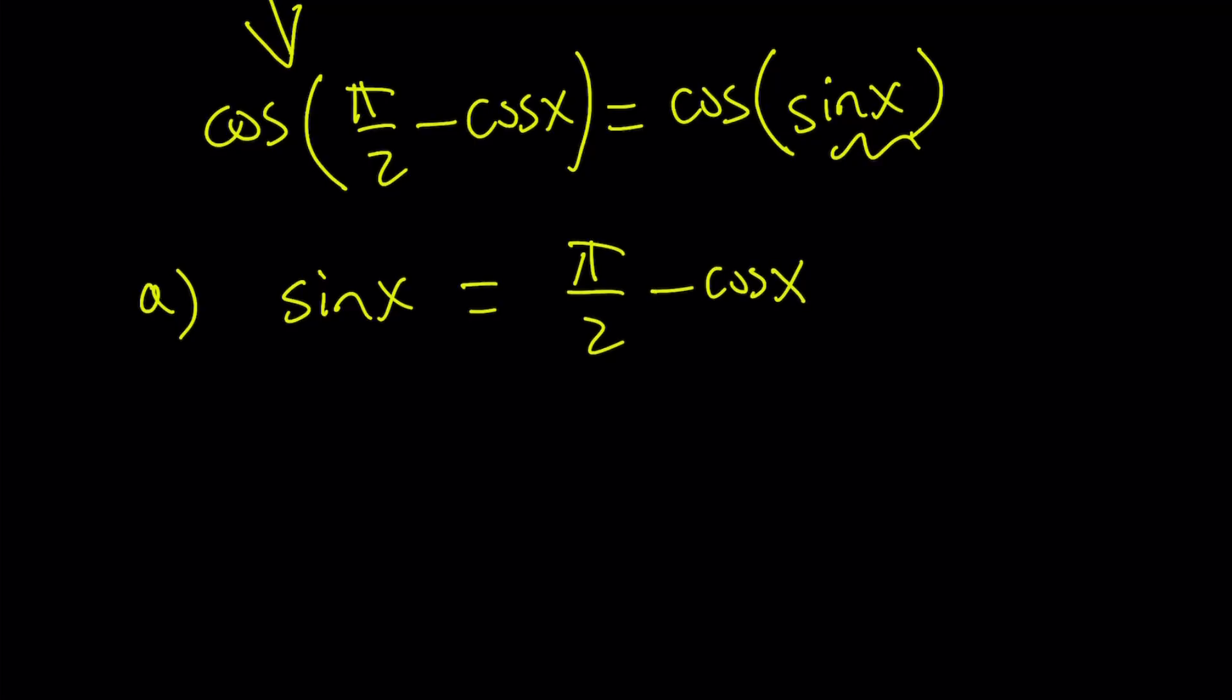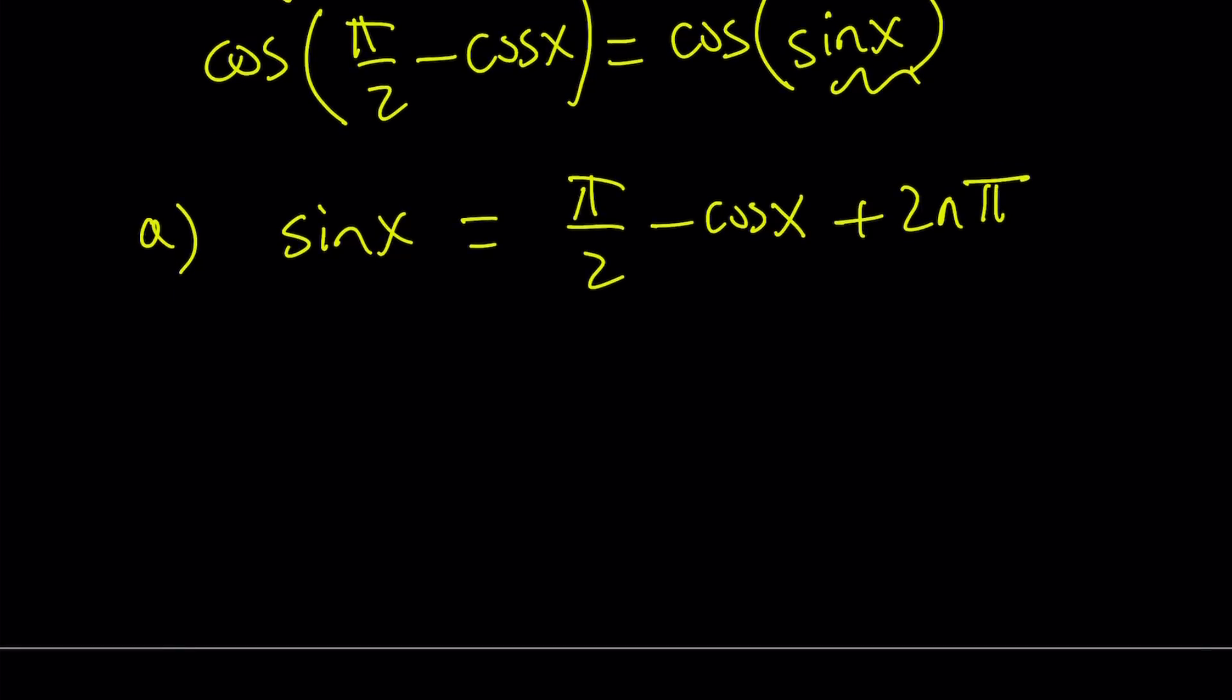which means if they're equal, their cosines are equal. But I want to add 2nπ also to this to find general solutions. And I want to put the sine and cosine on the same side. So let's go ahead and add cosine to both sides and write it this way.